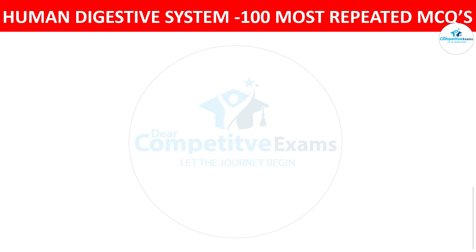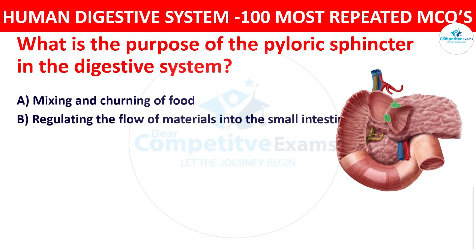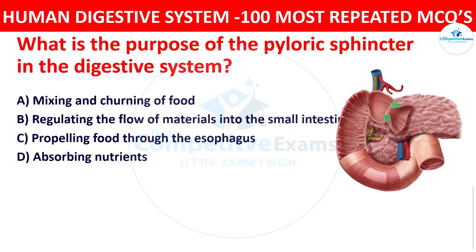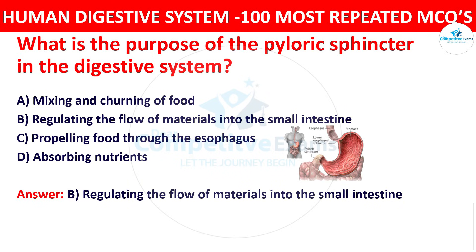Question number twenty: What is the purpose of the pyloric sphincter in the digestive system? Your options are mixing and churning of food, regulating the flow of materials into the small intestine, propelling food through the esophagus, or absorbing nutrients. The right answer is regulating the flow of materials into the small intestine. The pyloric sphincter controls the release of chyme from the stomach into the small intestine.